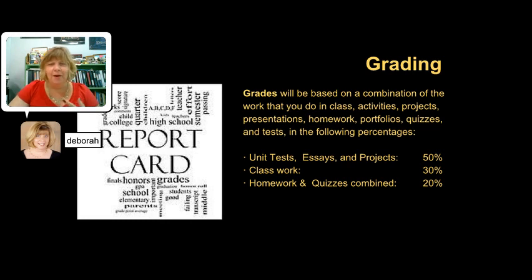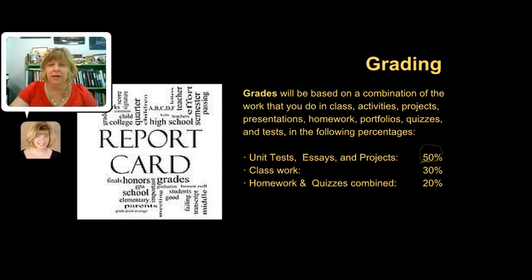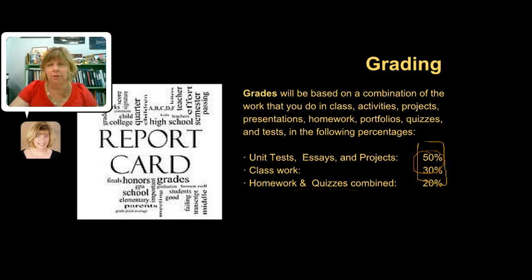Every student always wants to know: what will my grade be, and how do I get an A? Grades in my class are actually fairly simple. They're based on a combination of most of the things that you do in class — activities, project presentations, homework, some portfolios, and some traditional quizzes and tests as well. Your unit tests, essays, and projects combined will make up about half of your grade in the course. Classwork — the things you do in class like checkpoints to prepare for presentations and larger units — is worth 30% of your grade, about a third of the course. And then 20% are all of your homework and quizzes combined. I really think of homework and quizzes as ways to give you feedback to guide you towards those upper-level grades.